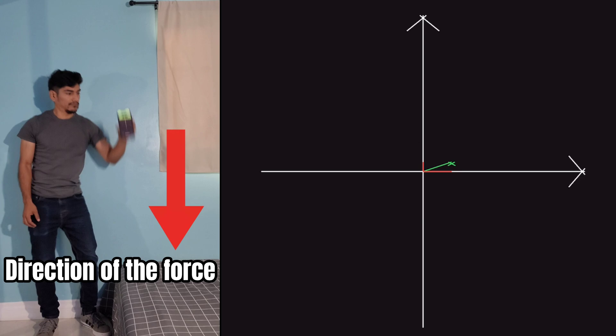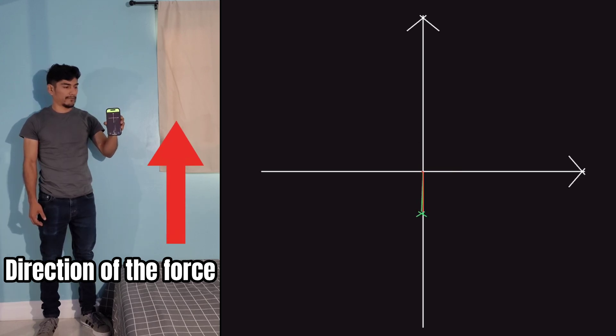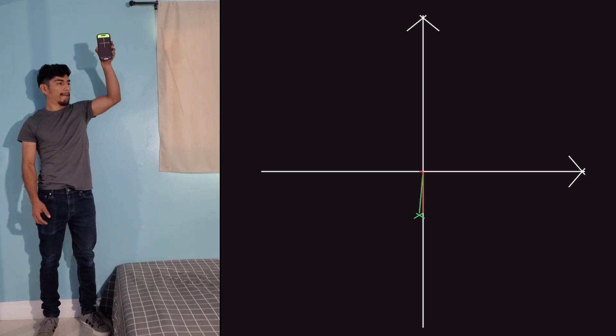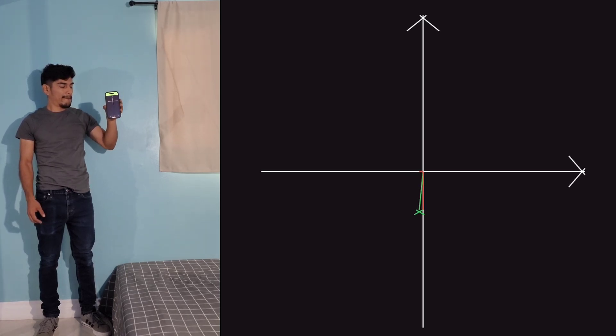When I apply a force down, the vector inverts up. And when I apply a force up, the downwards vector increases, showing that the vector on the phone is inverted from the true direction of the force or vector.